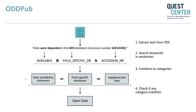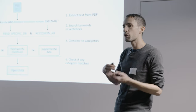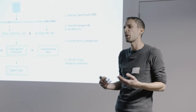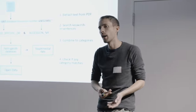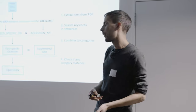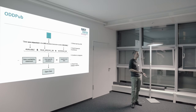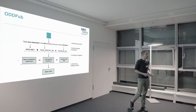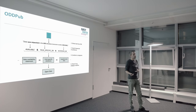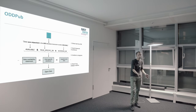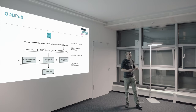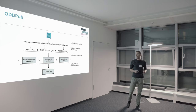Why do we need that? Open data sharing and reporting is not yet really standardized. There are many different ways people can share data: field-specific or more general databases, the supplement, and sometimes a data availability statement in the paper — but often there isn't one, so you basically have to read the whole publication.